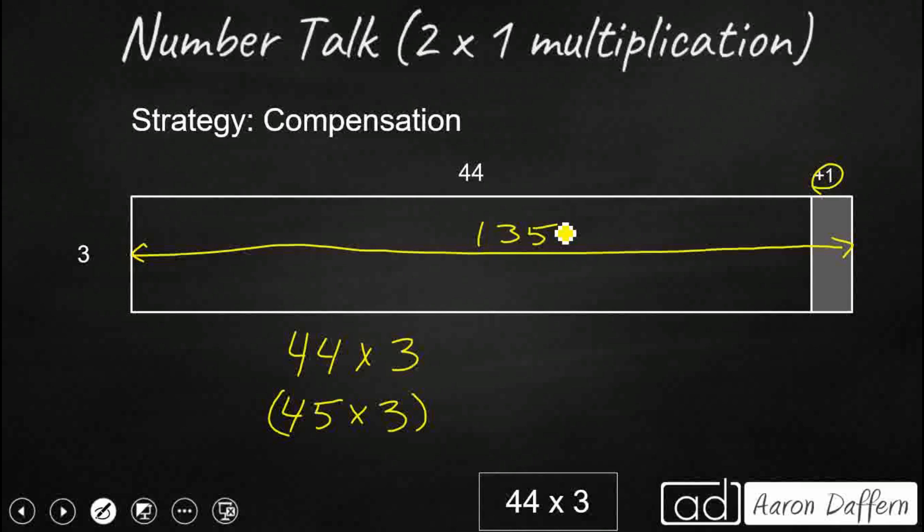But since I added that extra 3, now I've got to get rid of this 3. So I've got to get rid of one group of 3. And guess what we're going to get? Our 132. So that's how compensation works. You add a number that makes it easier to multiply and then you take that group back away at the end to get your same answer.